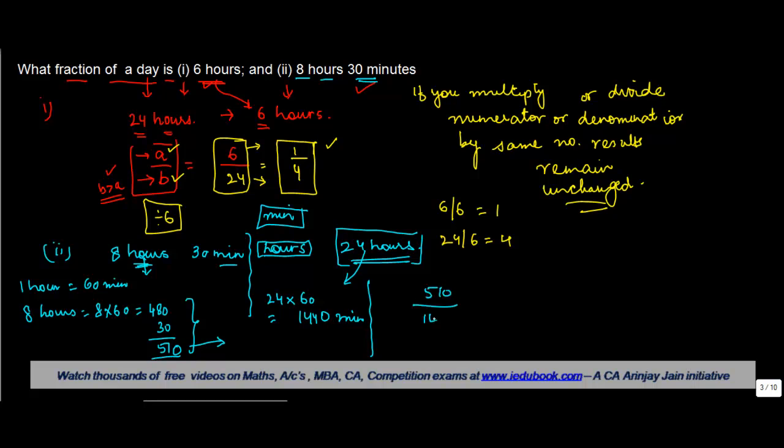So you can write this as 510 upon 1440, and this is a fraction that you get. Again you can write this by dividing it by some number which divides both of them. But I am not doing that simplification for you at this stage. My request is that once you are through with the proper, improper, and mixed fraction problem that I tell you in the subsequent videos, you must come back and solve this - 510 by 1440, what is the answer you will get?